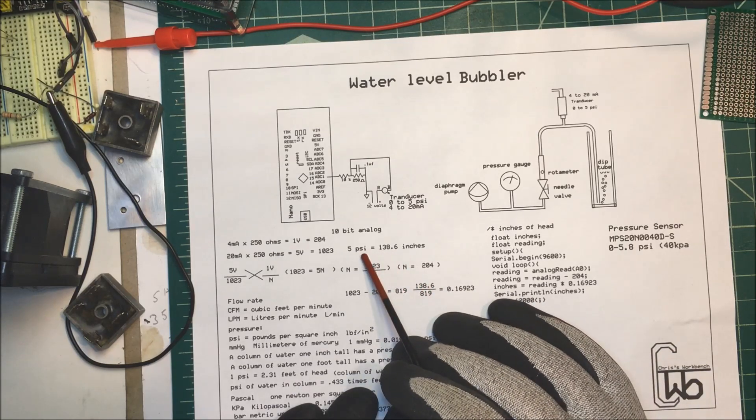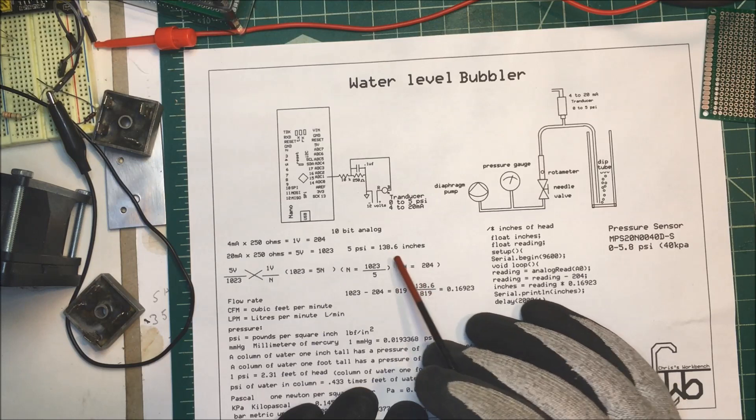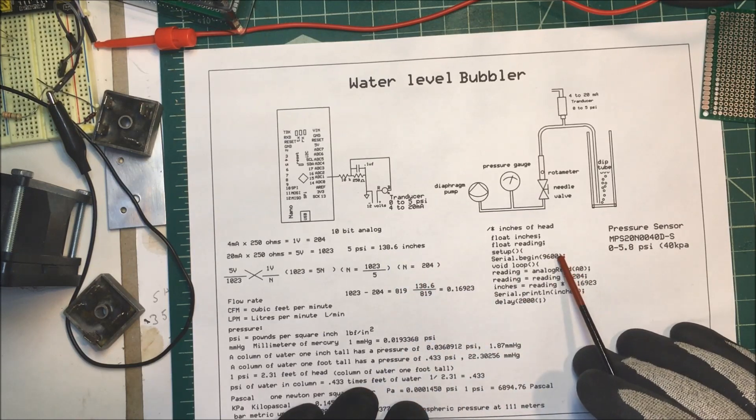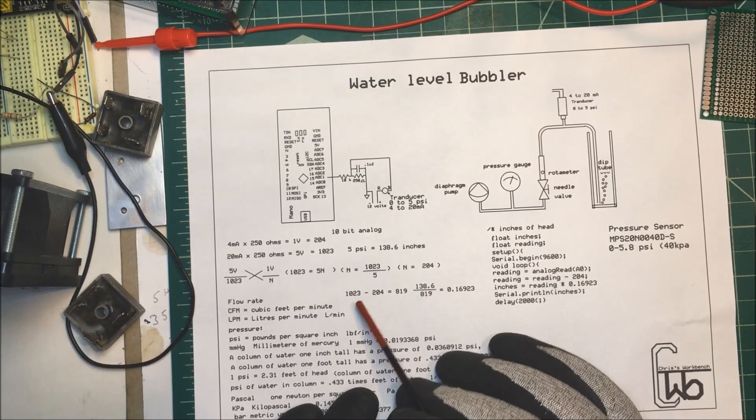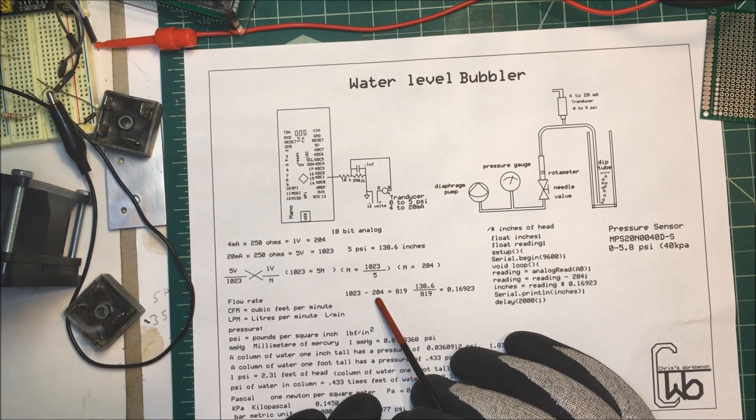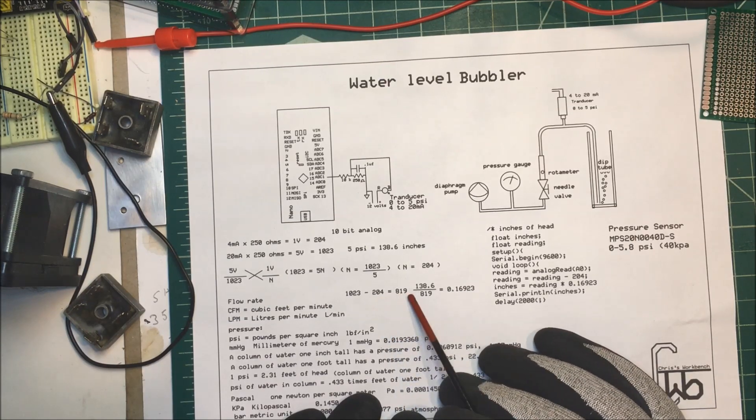Now, five PSI in inches is equal to 138 inches, 138.6 inches. And we want to do this in inches. So I'm using that. Now, what we do here is we take our 1023 and we subtract our 204 from that. And that gives us 819.